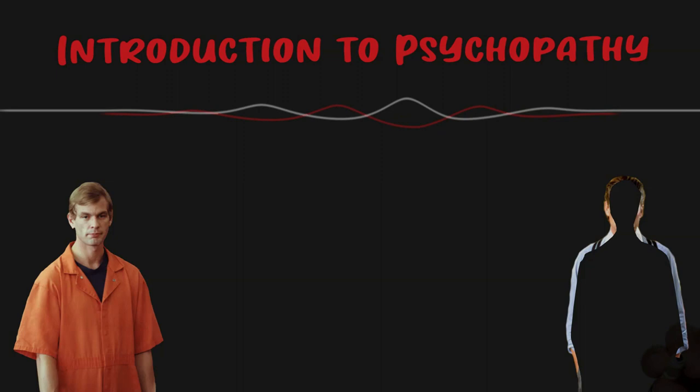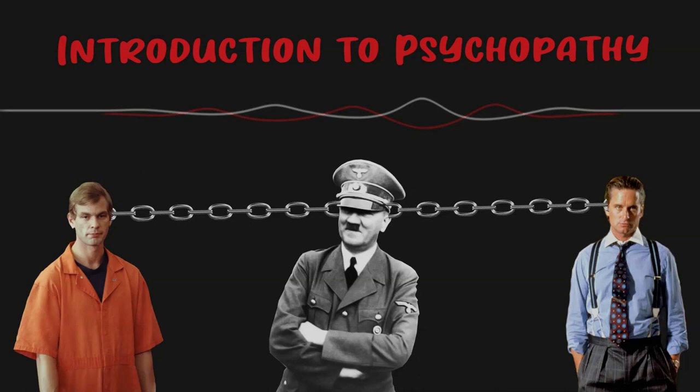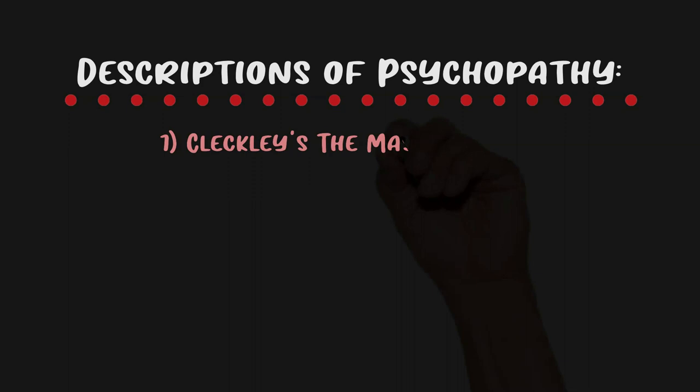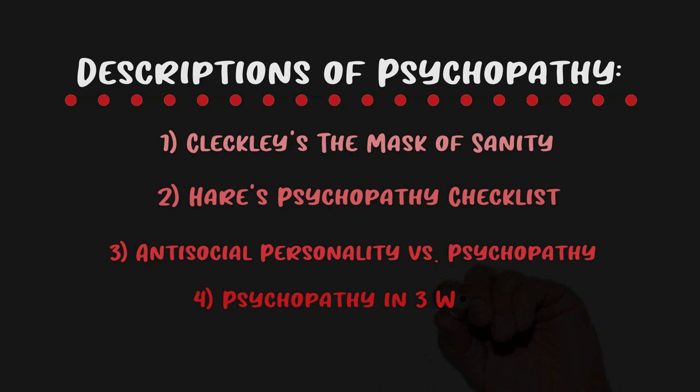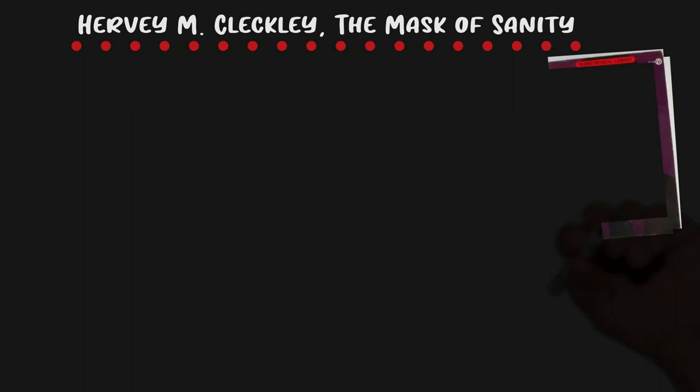This video is going to be an introduction to psychopathy — when you depersonalize another person and view them as just an object, an object for pleasure, instead of a living breathing human being. I'm going to review different descriptors of psychopathy, go over how it differs from antisocial personality disorder, cover Hervey Cleckley's descriptions from 'The Mask of Sanity,' quickly review Robert Hare's psychopathy checklist, and then summarize psychopathy in three words.